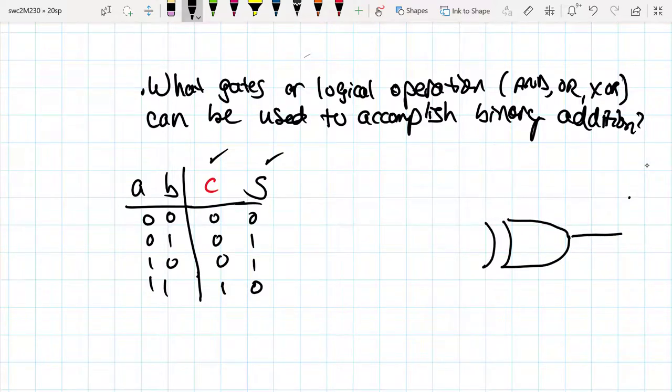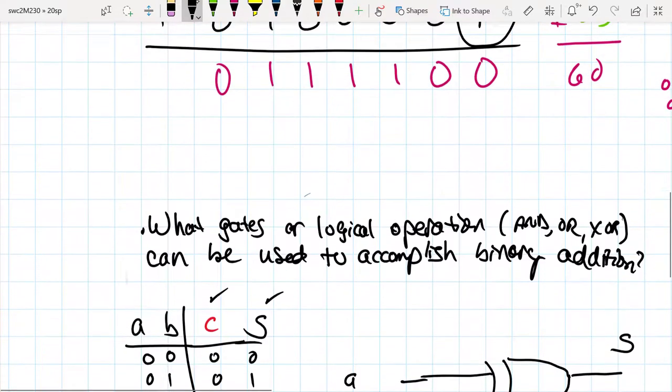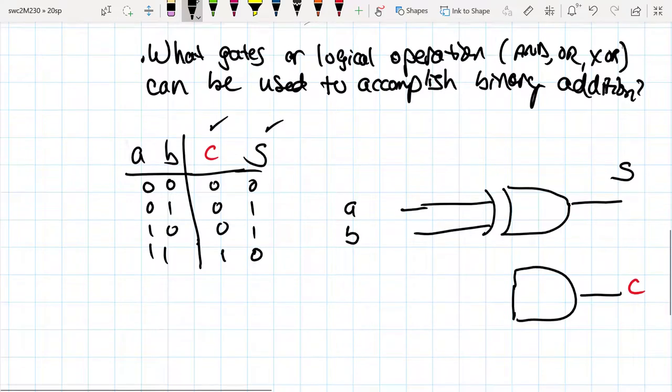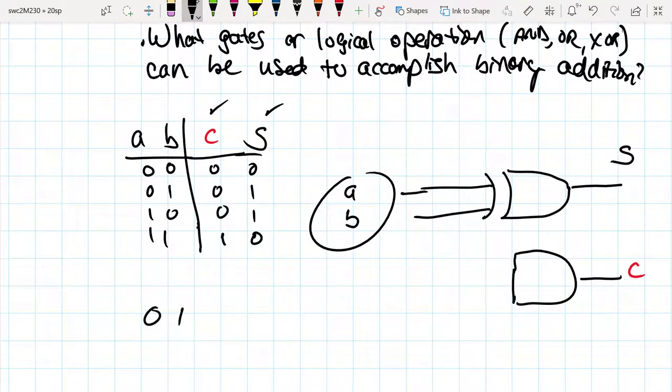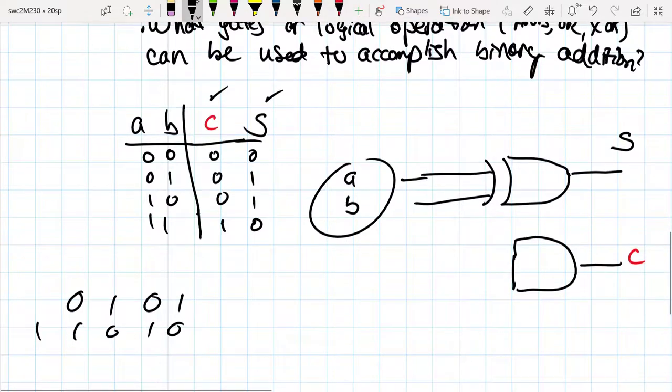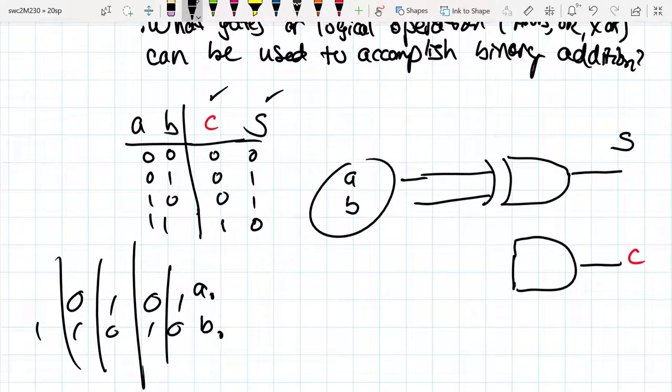One would be the sum, and then the other output would be the carry. And so we're going to look at those two input bits, bit A and bit B. And that bit A and bit B, remember, we had a stream of bits here. And so this would be kind of the bit A, bit B. And since we have multiple columns, it's really A sub 0, B sub 0, A sub 1, B sub 1, A sub 2, B sub 2.